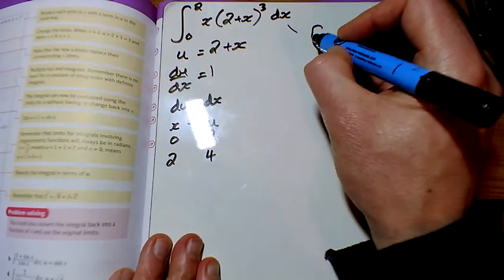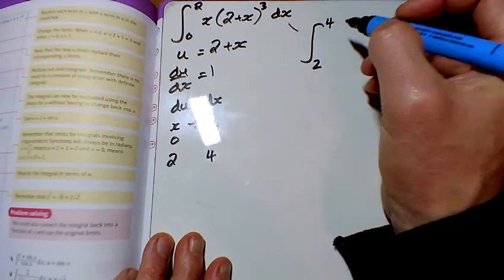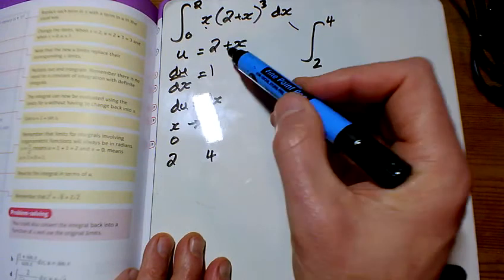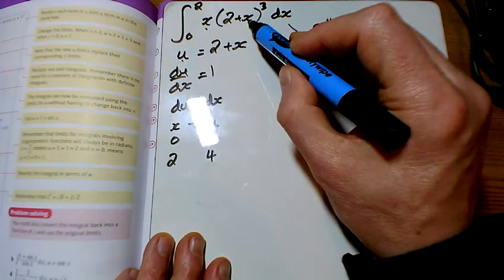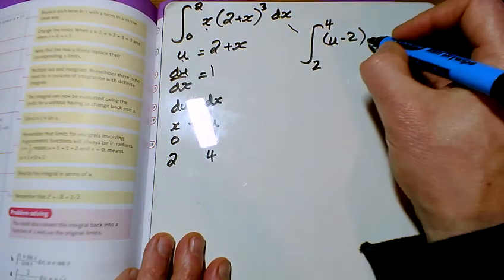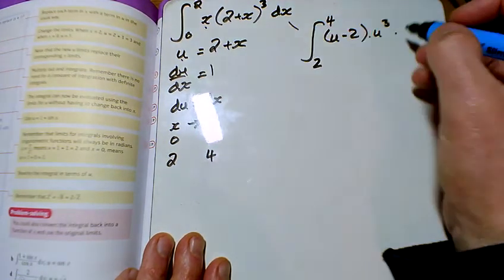So what does this integral become? So it's the integral now between 2 and 4 of x. Now x is u take away 2 there, isn't it? Then we've got the bracket, which is what we're calling u, so that's u cubed, and dx is du.